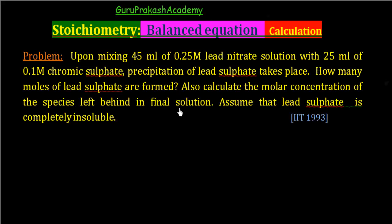Now let us discuss this problem. The question says: upon mixing 45 ml of 0.25 M lead nitrate solution with 25 ml of 0.1 M chromic sulfate, precipitation of lead sulfate takes place. How many moles of lead sulfate are formed? Also calculate the molar concentration of the species left behind in the final solution. Assume that lead sulfate is completely insoluble.